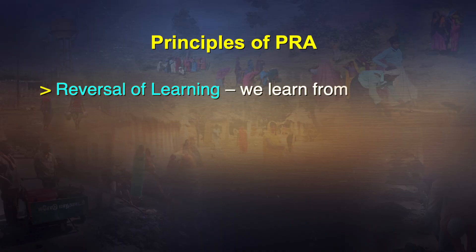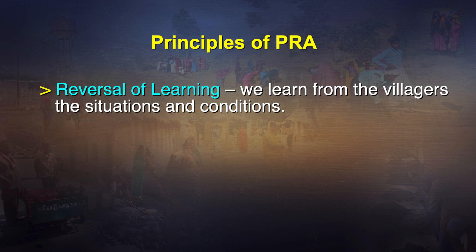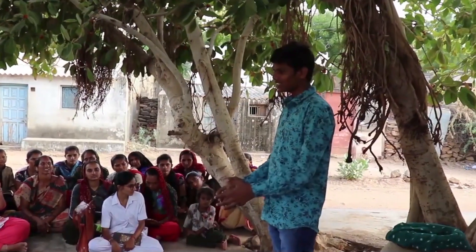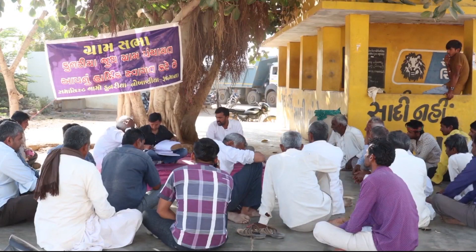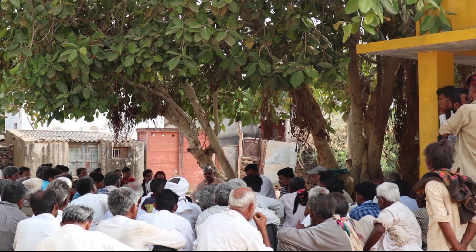One of the principles of PRA is reversal of learning. By reversal of learning, what we mean is we learn from the villagers. I say reversal because we have always been teaching; now we are going to learn from them. We learn from the villagers about situations and conditions. A villager who has lived in that village knows about it much better than you and I. The second principle is learning rapidly and progressively — you are there for three or four hours, and within that short span you learn progressively about a subject.